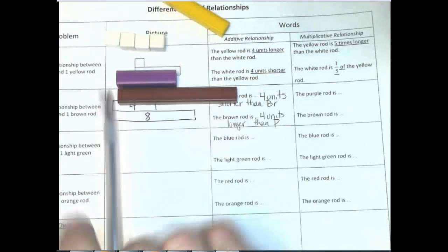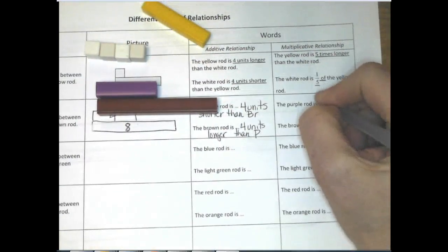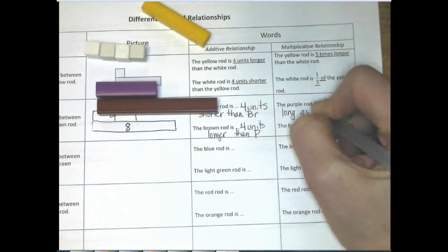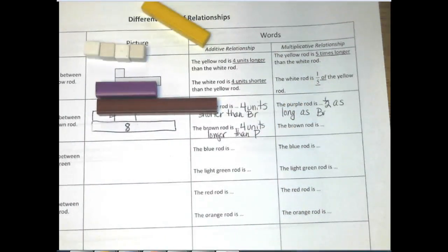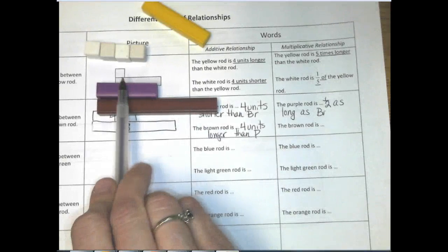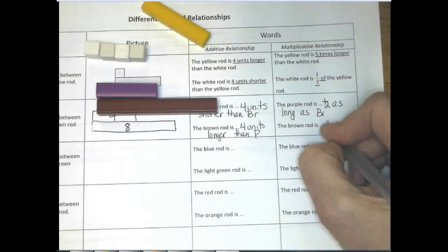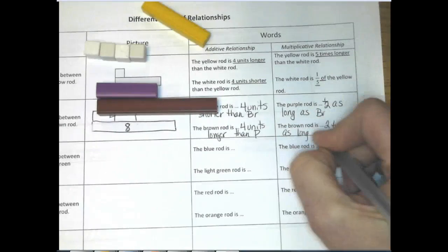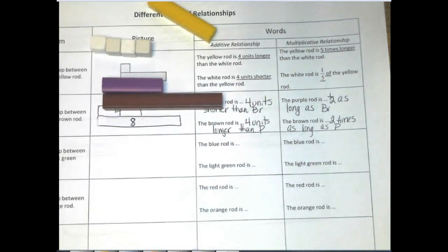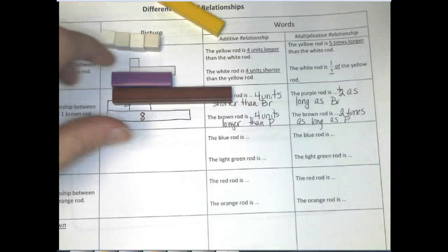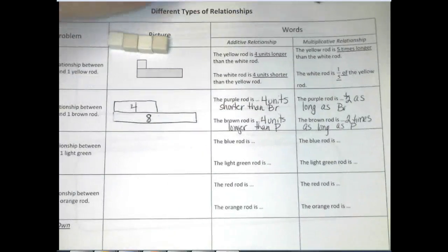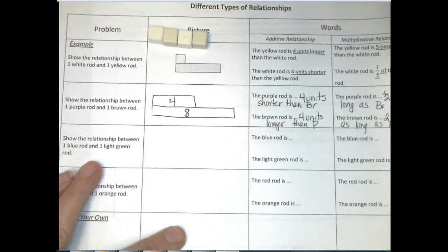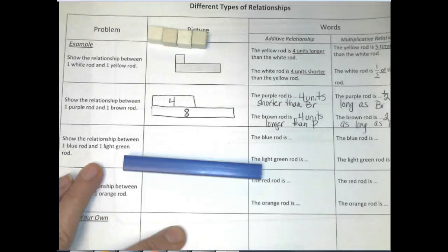So the purple rod — how would we say that compares to the brown rod? We would say that it is half as long as brown. And then what would we say about the brown rod in comparison to the purple? You would say the brown rod is two times as long as purple. I'm going to go ahead and put out the rod values because you probably don't have the Cuisinaire rods memorized, though you could probably find them on the internet.